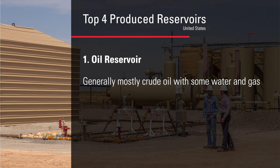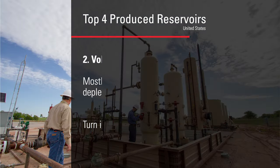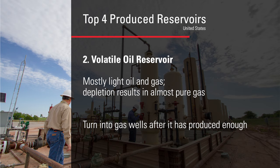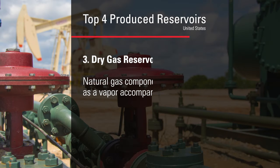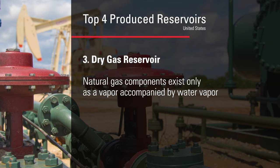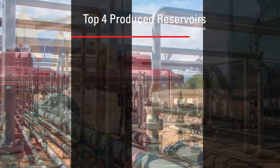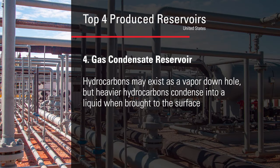Oil reservoirs are mostly crude oil with some water and gas. Volatile oil reservoirs turn into gas wells after they are produced long enough. Dry gas reservoirs produce mostly natural gas with some water vapor. Gas condensate reservoirs are full of heavy hydrocarbons that turn into NGLs once they are brought to the surface.